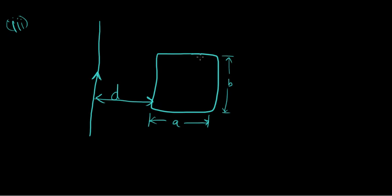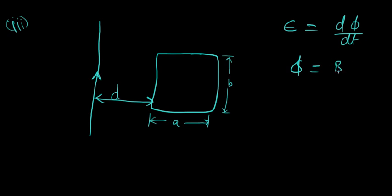What we have to figure out is the induced EMF in the loop because of this setting, and we know that EMF is given by dΦ/dt. But in this case, because of the current-carrying wire on the left-hand side, the magnetic field is going to be stronger on the left side and will get weaker as we proceed to the right leg of the loop — so the field varies.